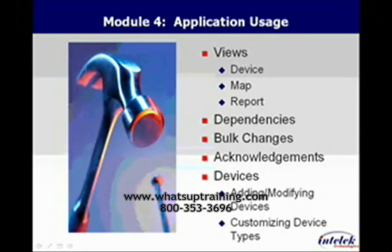We're going to be talking about dependencies — up and down dependencies — and how that can help you in your environment. We'll be talking about bulk rule changes and some of the caveats for bulk rule changes and things to watch out for. Additionally, we're going to be discussing acknowledgments, what acknowledgment mode means, how you can use acknowledgment mode, and how some other people have used acknowledgment mode.